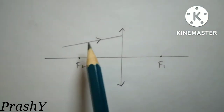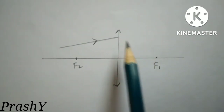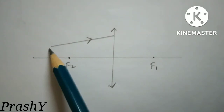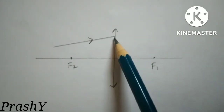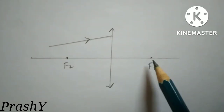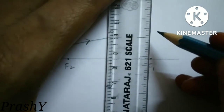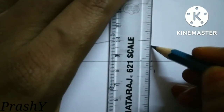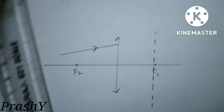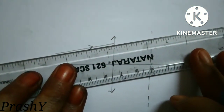Let us complete another diagram. In this diagram the incident ray is given and we have to draw the refracted ray and trace the image. Observe this ray — it is making some angle with the principal axis, so the image should fall on the focal plane. Draw the focal plane at F1.